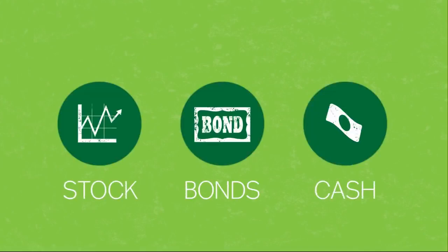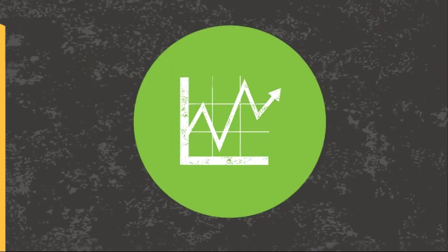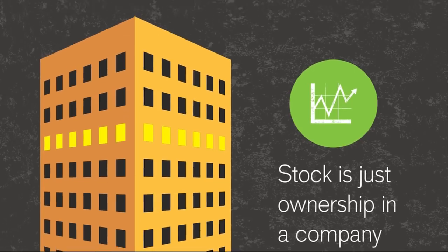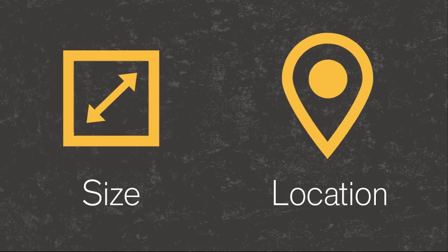Stock, bonds, and cash. Stock is just ownership in a company. There are many ways to classify stock. Two major ones are size, called market capitalization, or cap, and company location. Each classification has its own typical level of risk.